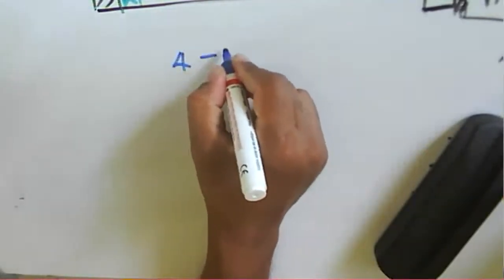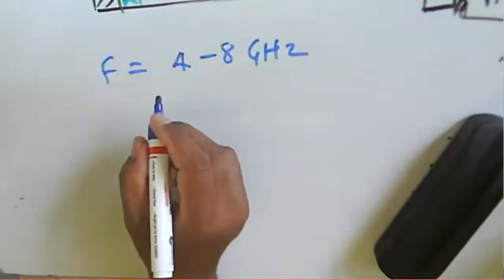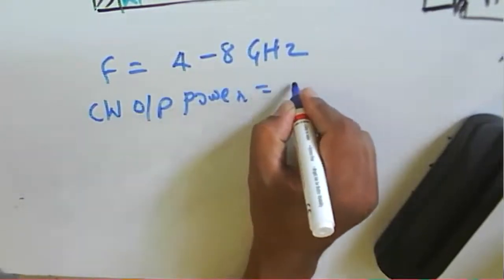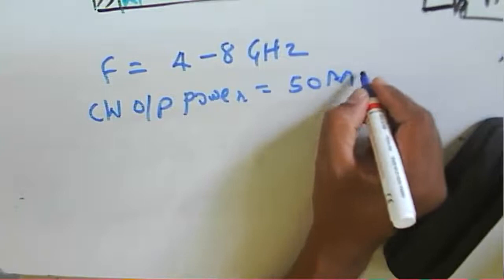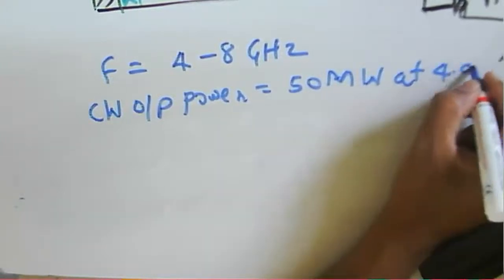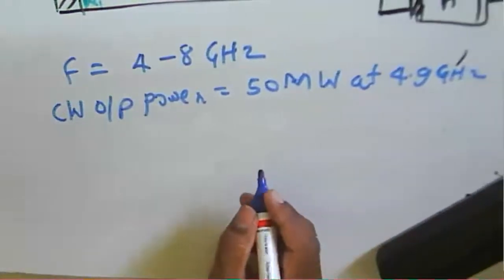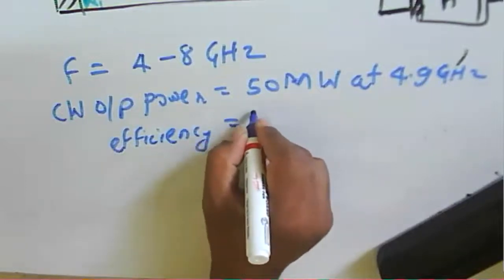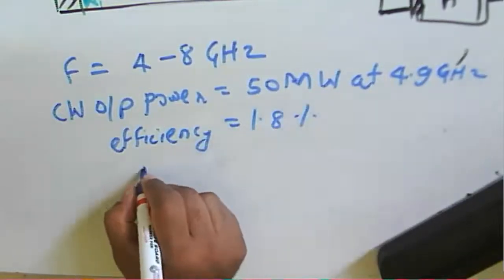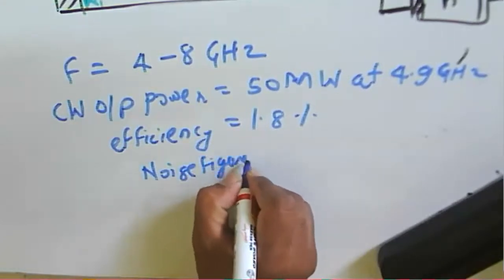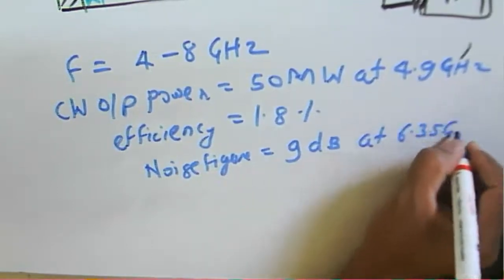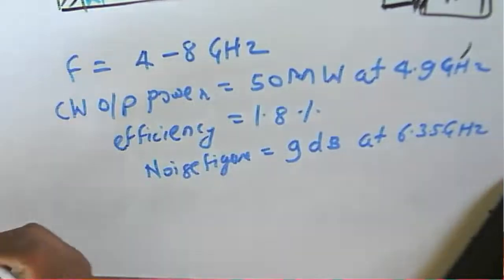The BARITT diode operates at a frequency range of 4 to 8 GHz. The CW output power is 50 milliwatts at 4.9 GHz, the efficiency is very low at 1.8%, and the noise figure is 9 dB at 6.35 GHz.